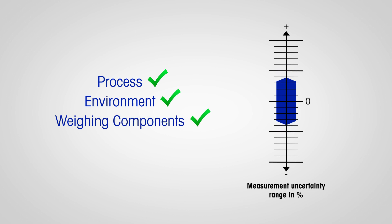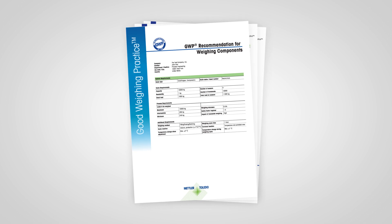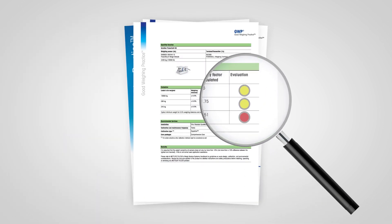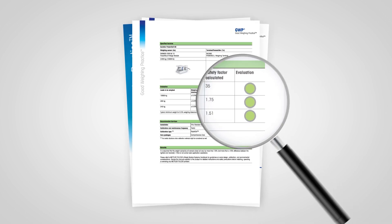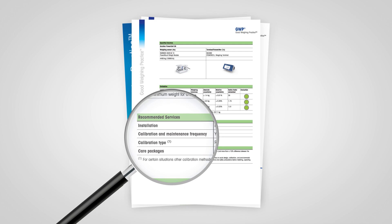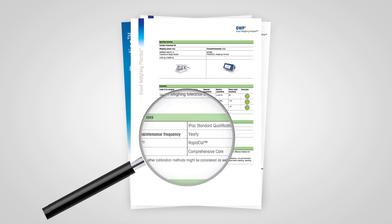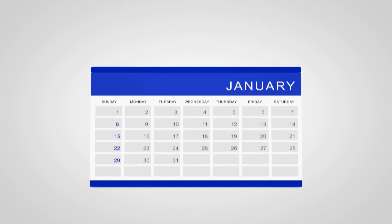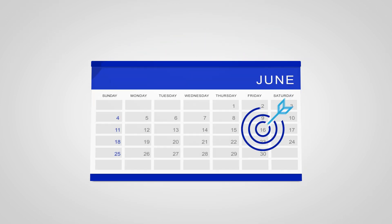Based on your process tolerance, our GWP recommendation indicates how well these requirements are met. This is displayed with a clear fit-for-purpose symbol. In addition to the setup, the GWP recommendation tells you what the optimal services are to maintain the system performance.